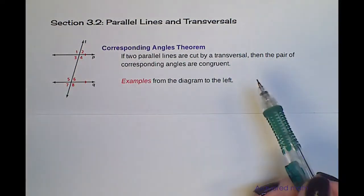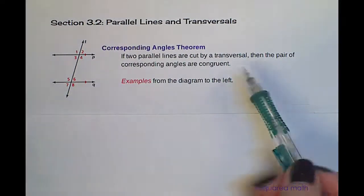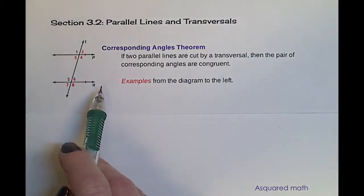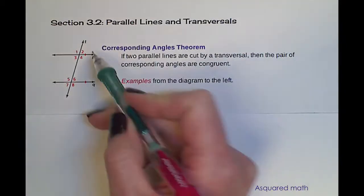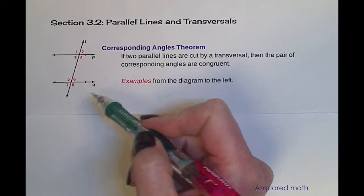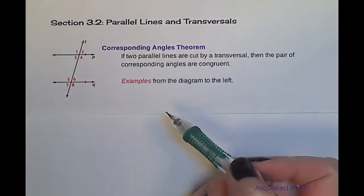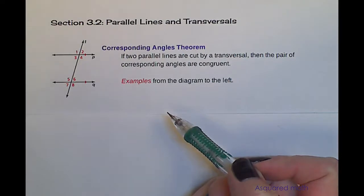The first set of parallel lines we're going to look at is within this picture, and the angles that we're going to look at within these parallel lines are called the corresponding angles. The corresponding angles theorem says if two parallel lines are cut by a transversal, then the pair of corresponding angles are congruent — so that means they are exactly the same measure.